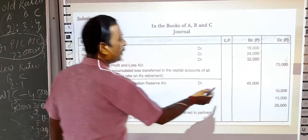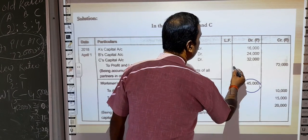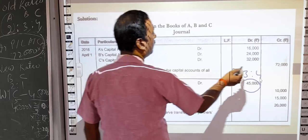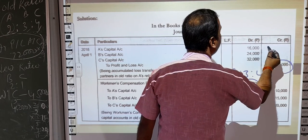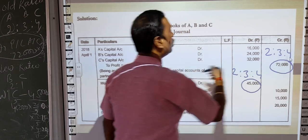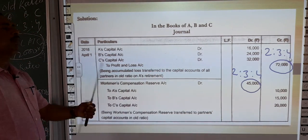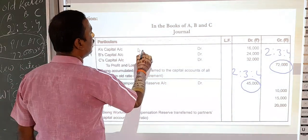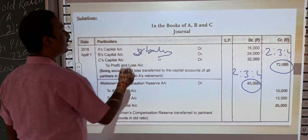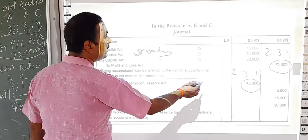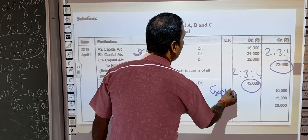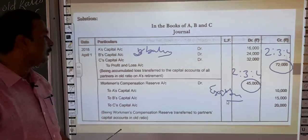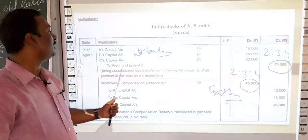So the 45,000 is distributed in 2:3:4 ratio, just as the 72,000 was also distributed in the 2:3:4 ratio. In both cases you have distributed in the 2:3:4 ratio. The 72,000 was a loss because it was a debit balance in the Profit and Loss account, so it was debited to all partners' capital accounts. The 45,000 was the Workman Compensation Reserve excess balance — the excess over the claim — and that was credited to all partners.